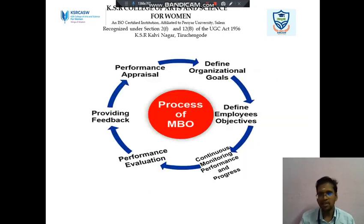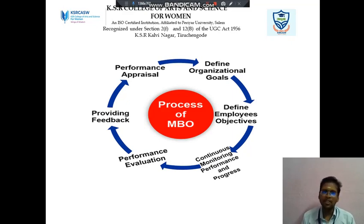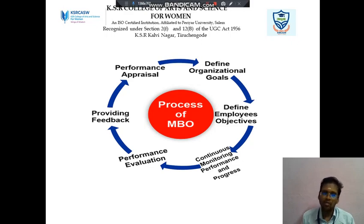Next we discuss about the process of MBO. There are five to seven processes available. The first one is defining the goal, the next is defining employees' objectives, then continuing or monitoring the performance and progress, then performance evaluation, then providing feedback.